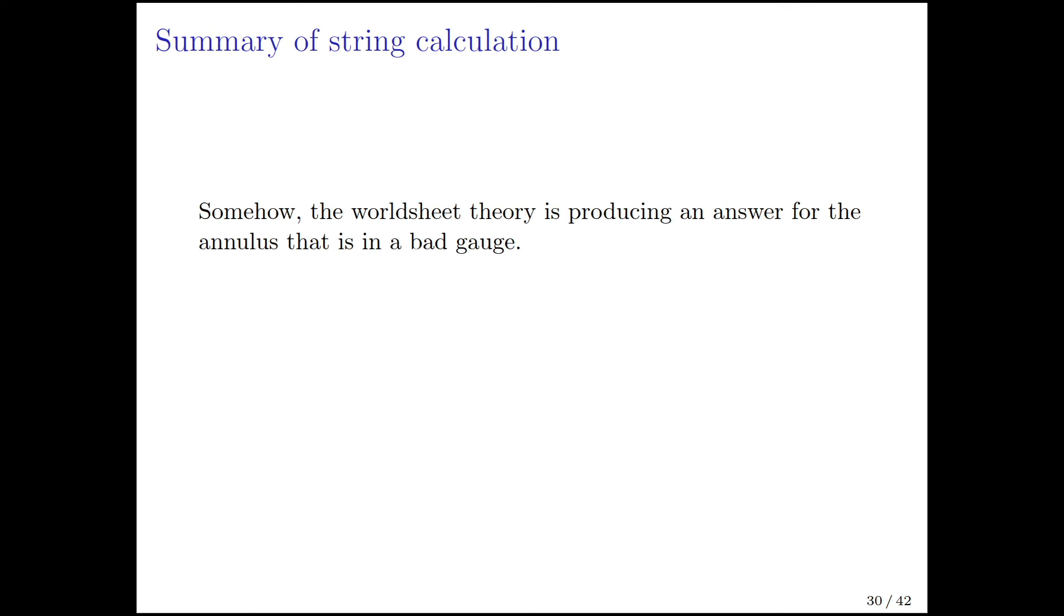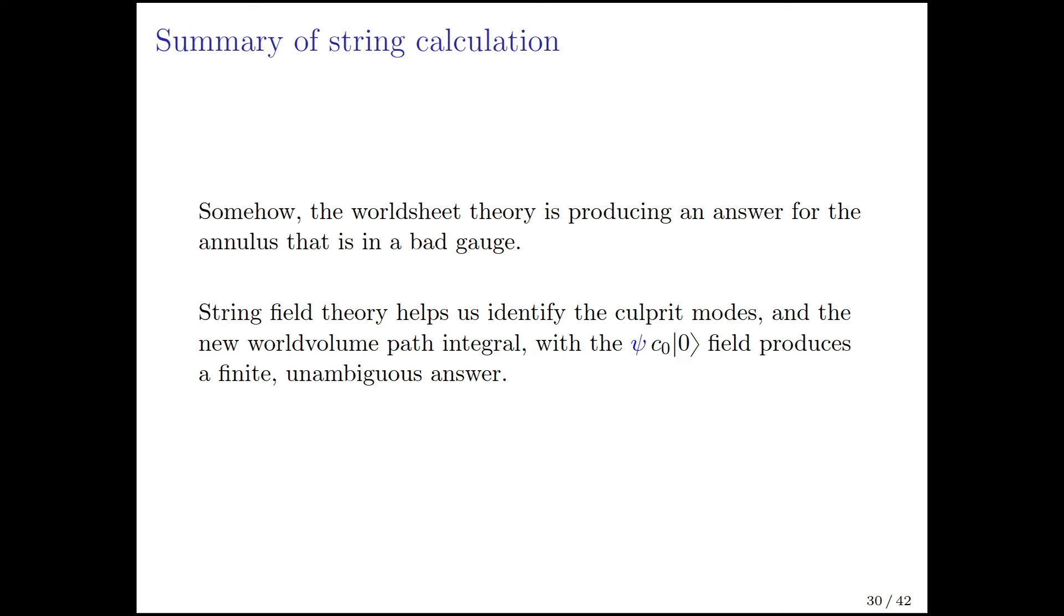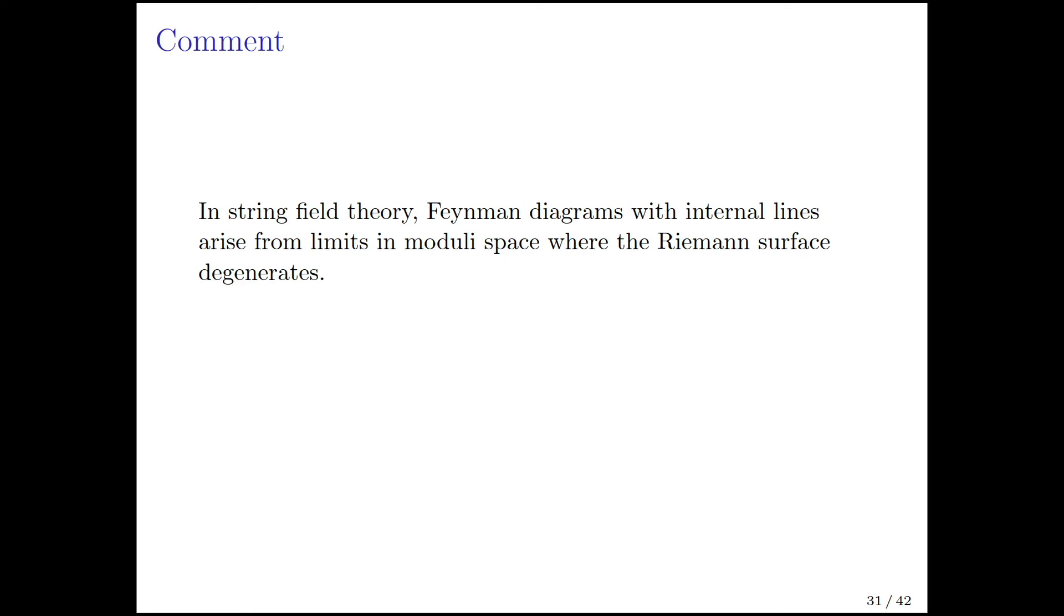That's the string theory calculation. I want to summarize it. Somehow, the worldsheet theory is producing an answer for the annulus that is in a bad gauge. String field theory helps us identify the culprit modes, and the new worldvolume path integral with the psi field in there produces a finite unambiguous answer. This problem doesn't stop here with the annulus normalization, because Feynman diagrams with internal lines arise from limits in moduli space where the Riemann surface degenerates. The worldvolume path integral now includes the psi field, so the psi field will appear on internal lines in Feynman diagrams.